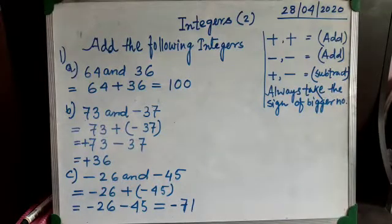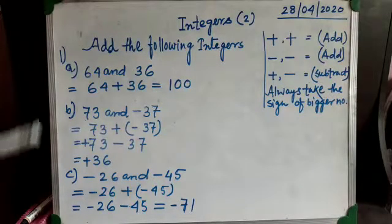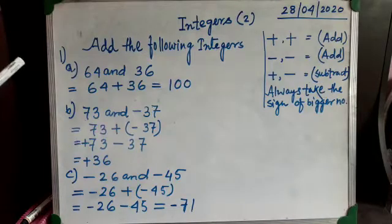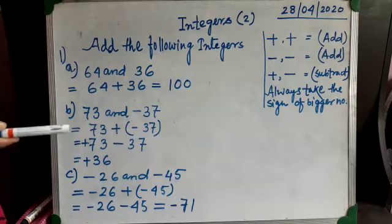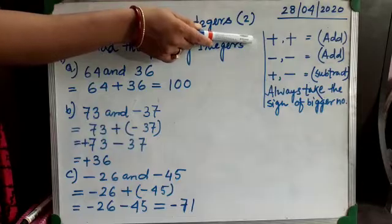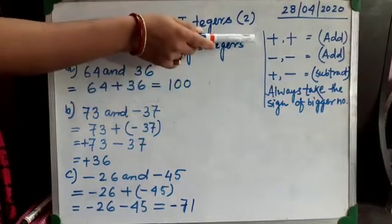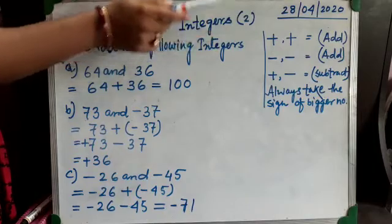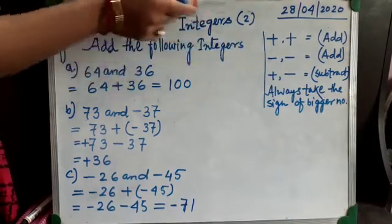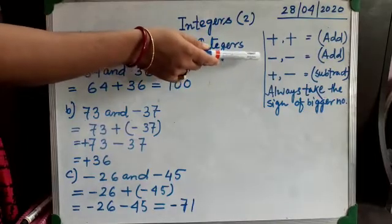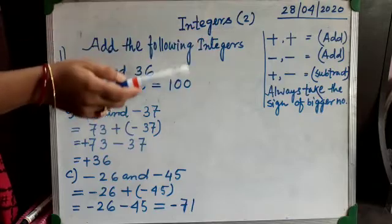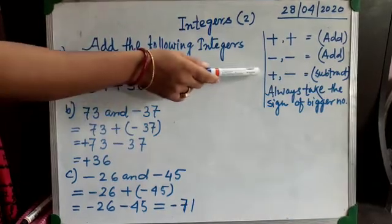Welcome, my dear students, to our next class — integers part 2, which is based on the addition of integers. Here I am going to tell you how to add integers with different signs. Before we start, you can see I have written some rules. If both numbers have the same sign — both positive — we have to add them. If both numbers have a minus sign, then also we have to add them.